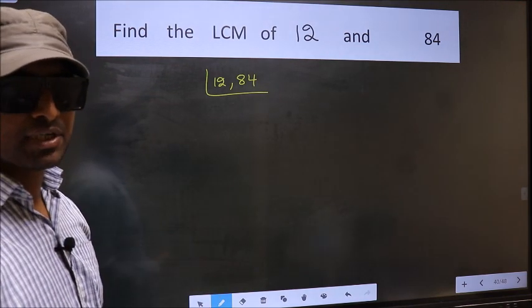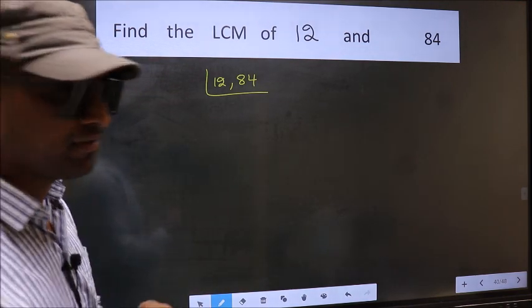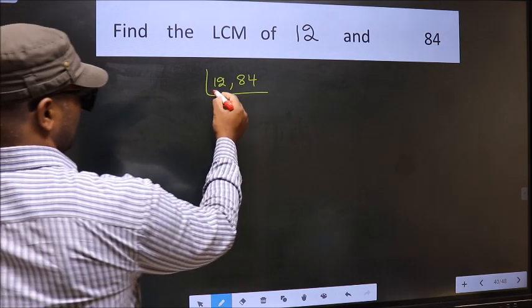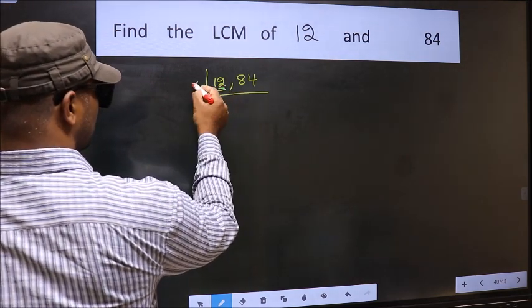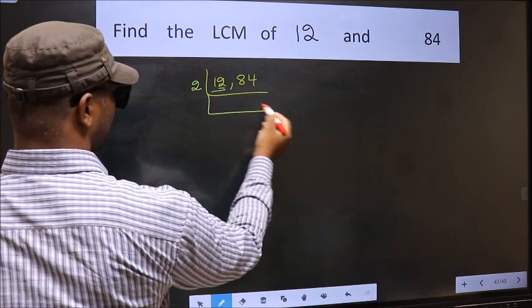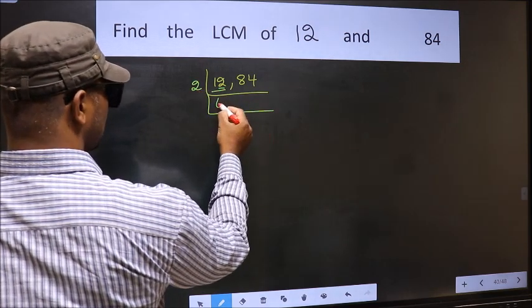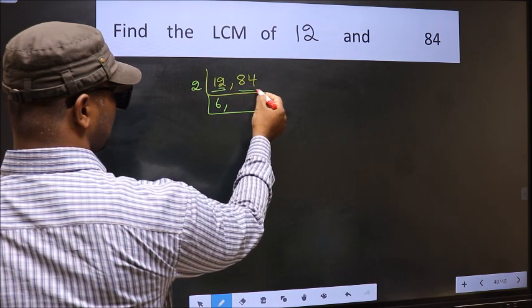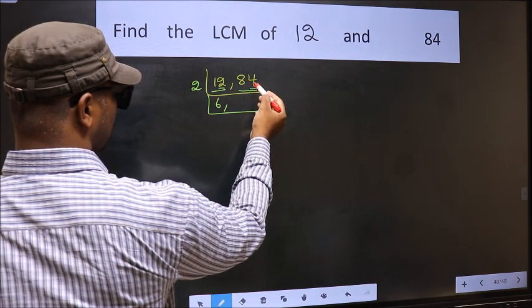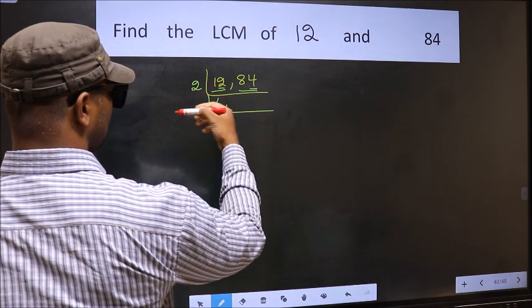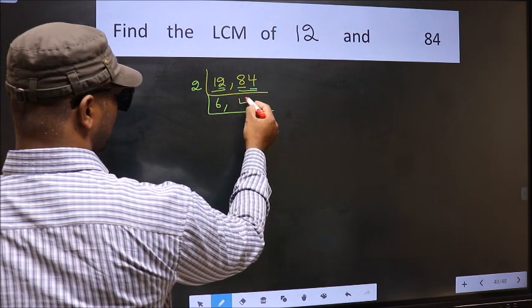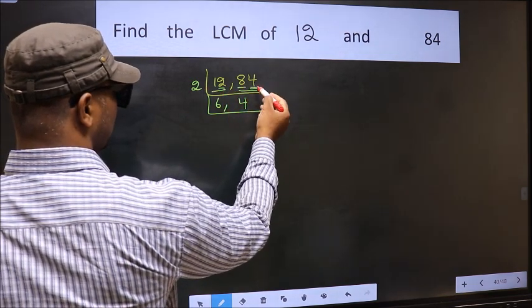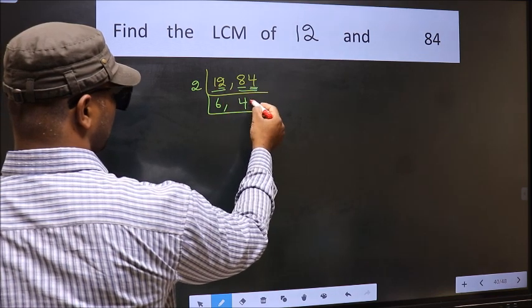Now you should focus on the first number which is 12. The last digit 2 is even, so take 2. 2 times 6 is 12. Now the other number 84, last digit 4 is even, so this is divisible by 2. 2 times 42 is 84. Continuing to divide: 2 times 3 is 6, and 2 times 21 is 42.